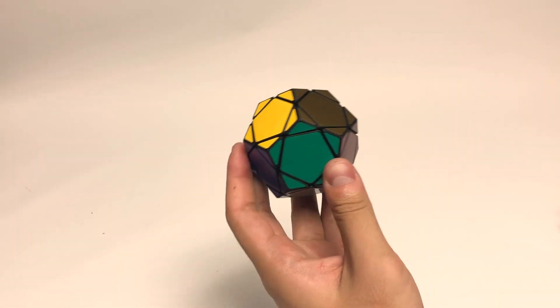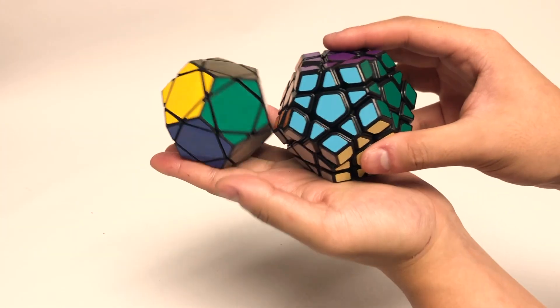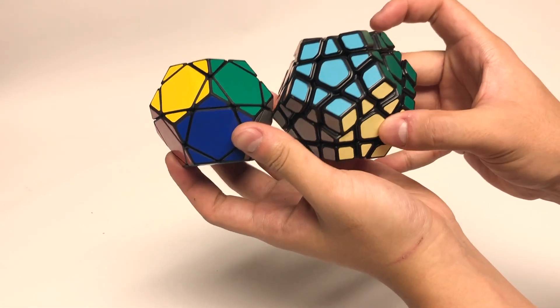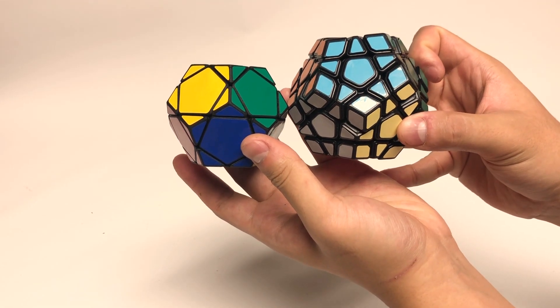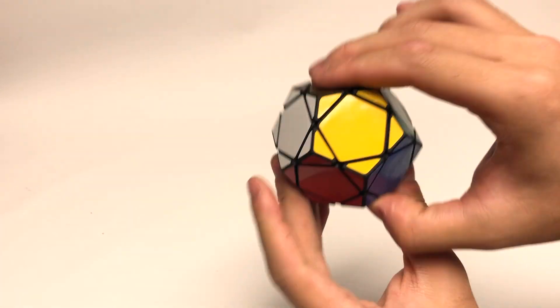This one's also special because it's quite small. When compared to a normal Megaminx, you can see it's approximately one centimeter smaller from face to face.